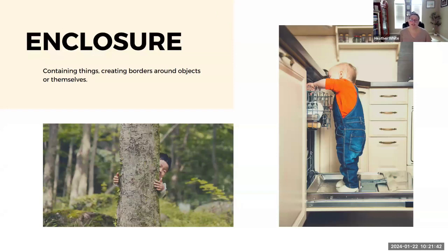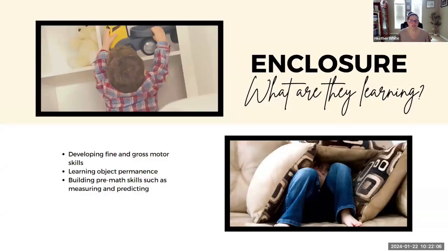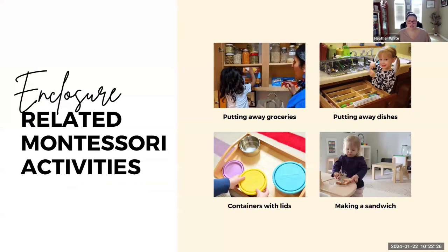Now we'll look at the enclosure schema, which is very similar to the enveloping schema — it's a child who has an interest in containing things or creating borders around objects or even themselves. The difference is that the object or the child can still be seen; they are not covered or enveloped completely, just inside an enclosure. Children in this schema are building object permanence understanding, pre-math skills like measuring and prediction, and fine and gross motor skills. They might enjoy putting away groceries or dishes, and containers with lids.